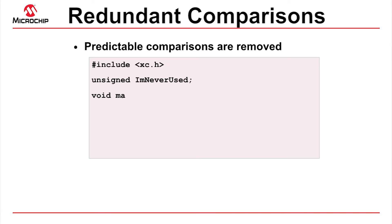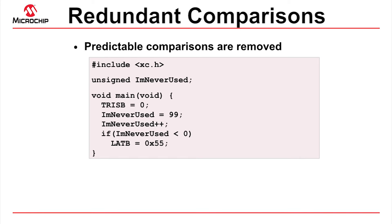Here is an example of code where the variable 'I'm never used' is assigned a value, incremented, and compared with a constant, but it still does not contribute to the program's operation. Since the unsigned object 'I'm never used' can never be less than 0, the controlling expression in the if statement must always be false, and the compiler will see that the entire if statement can be removed. Since 'I'm never used' is no longer compared, incrementing this object has no effect, and its assigned value is never used. The program now makes no reference to 'I'm never used', and the variable is removed entirely.